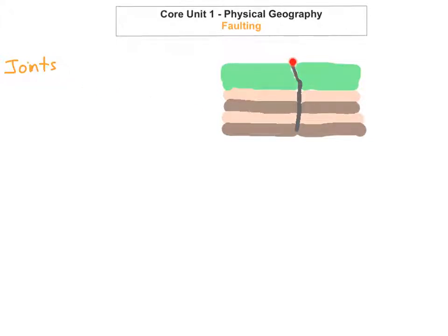But when the pressure gets too big, that movement actually occurs. The fracture is known as a fault. So this line here would be known as a fault because it's bigger than a crack. It's actually now known as a fault because the plates have actually pulled apart and created a fault.